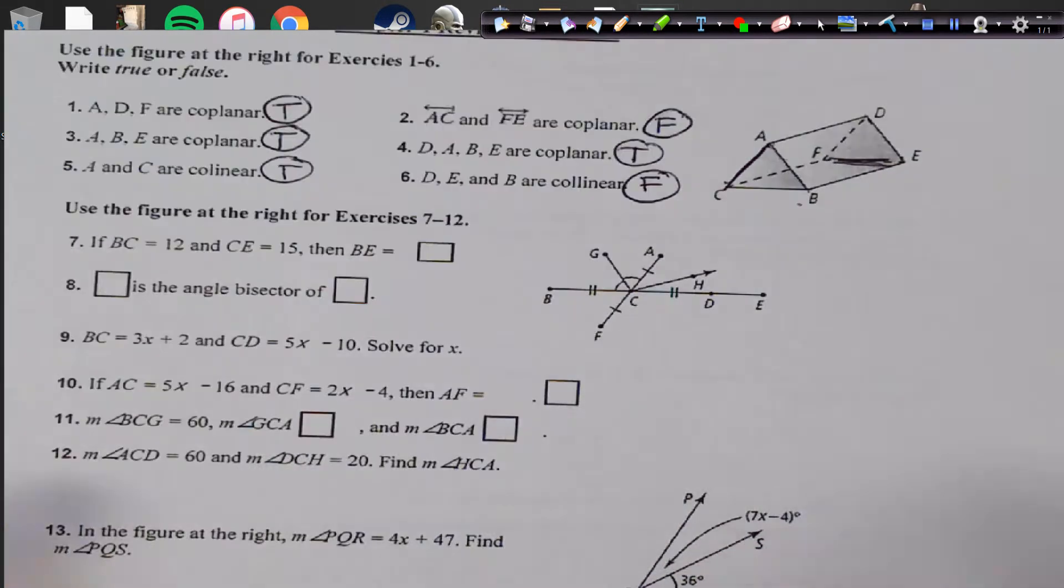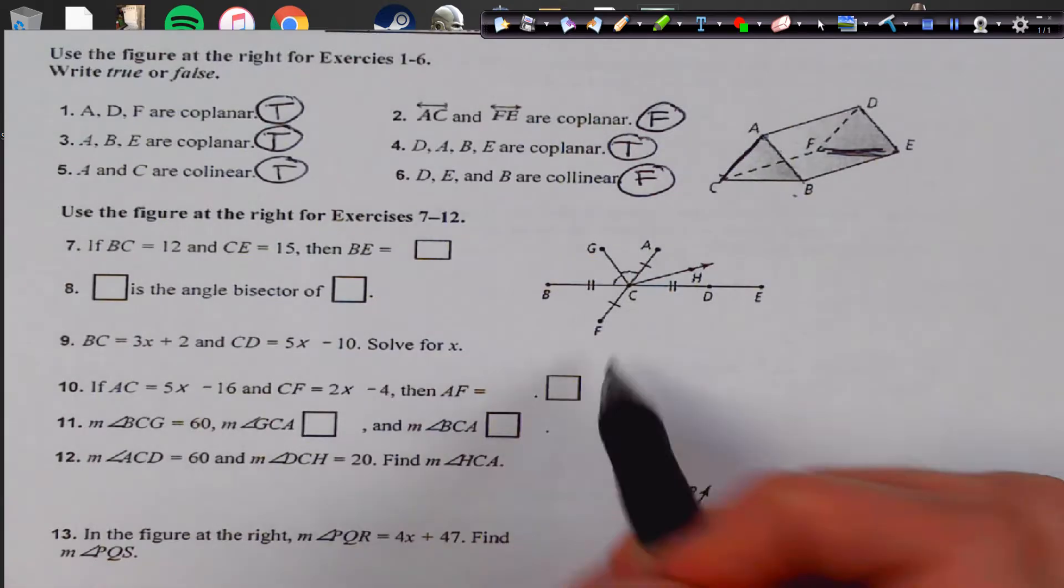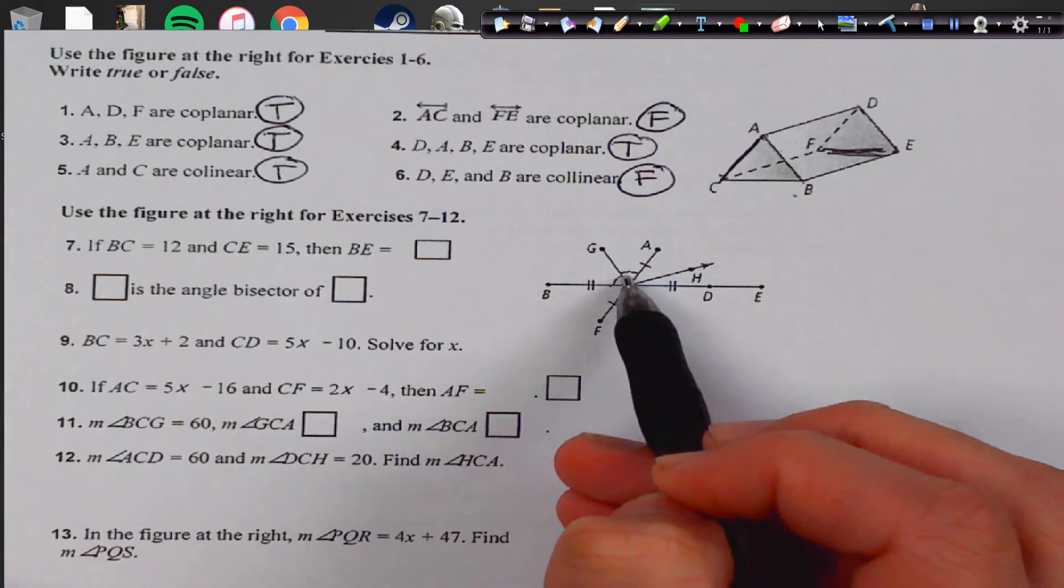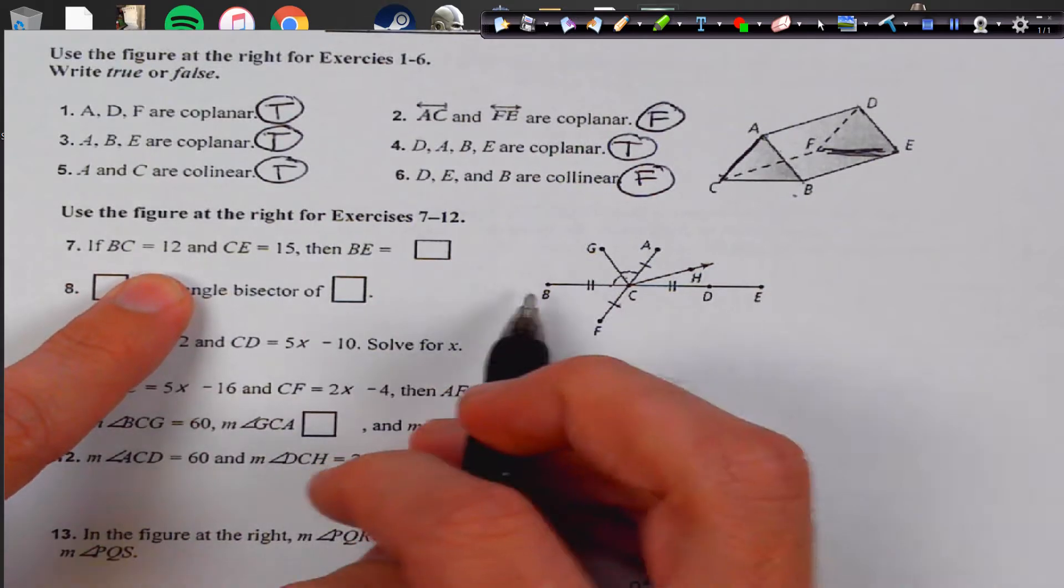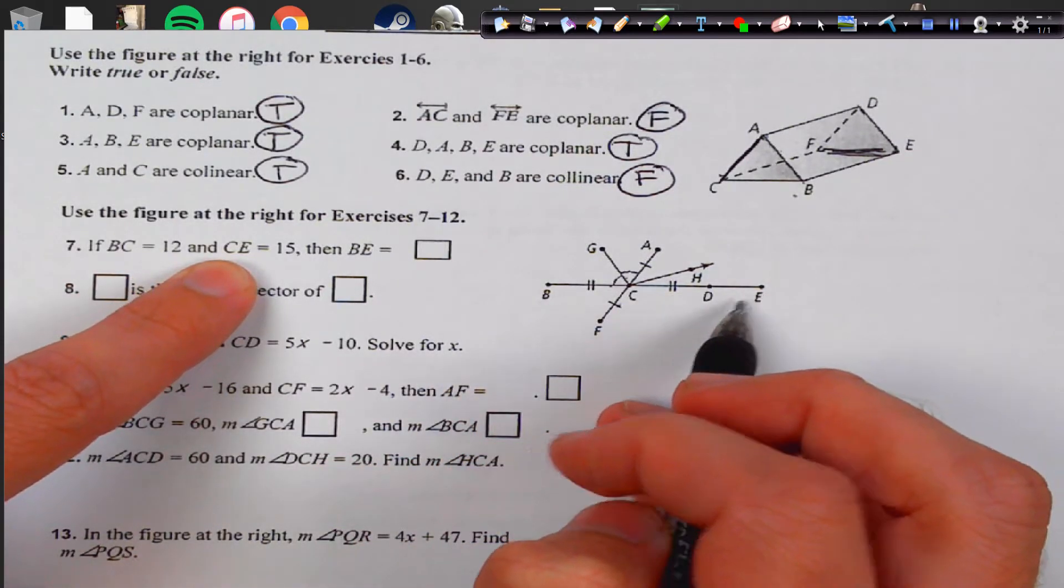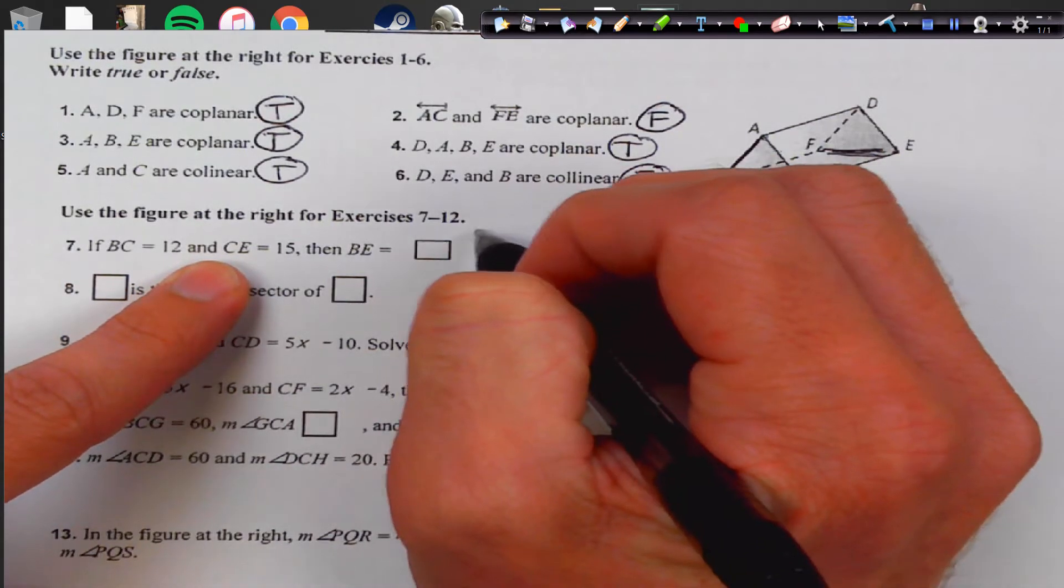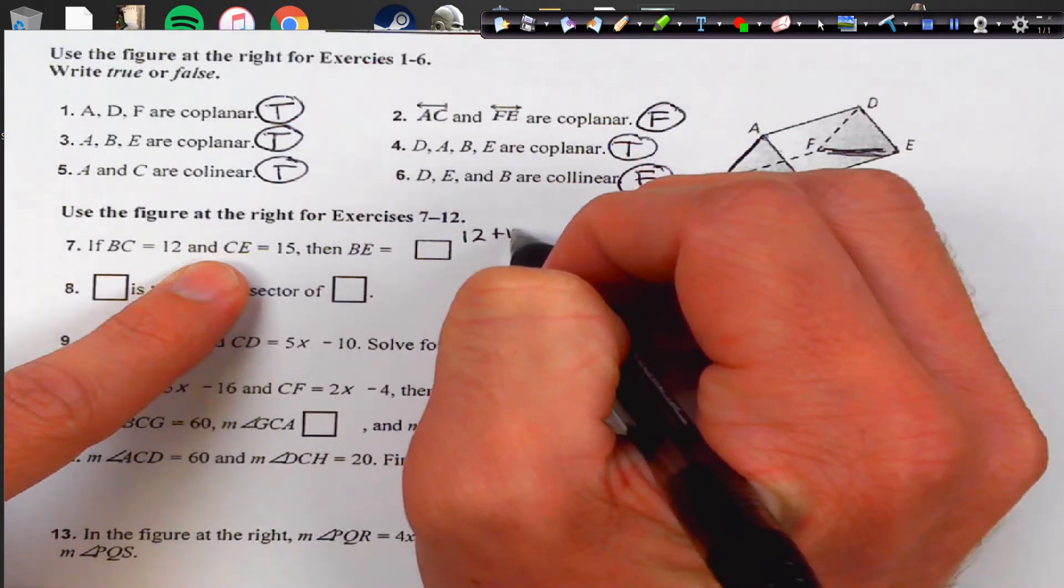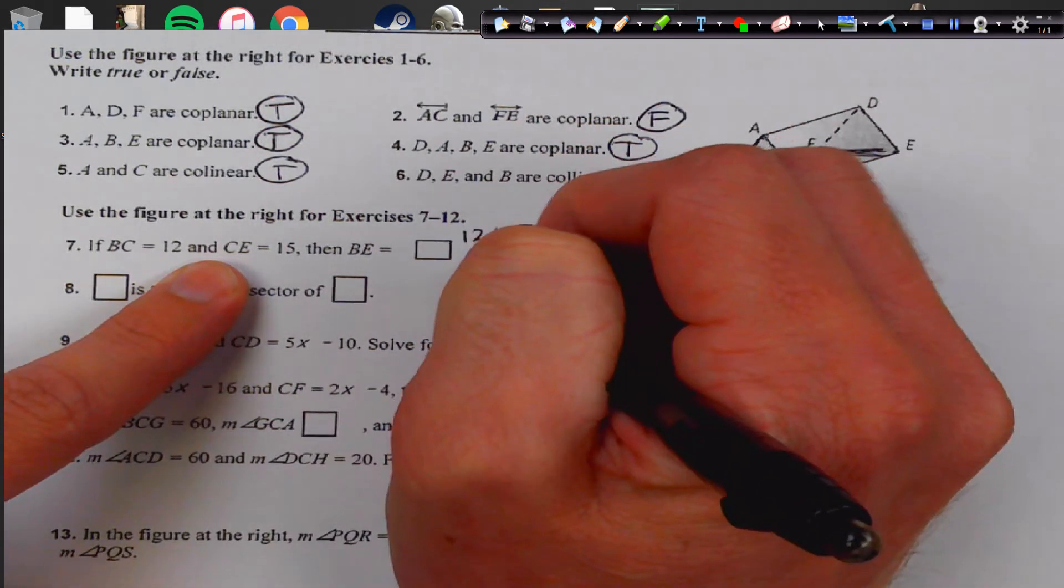Okay. Number seven through twelve, we're using this picture here, and we see congruency marks, so those are congruent. Congruency curves, those angles are congruent, and here's another set of congruency marks. So first, BC is twelve, and CE is fifteen, so what's the total distance? This is segment addition postulate, we're just going to add those two together, and twelve plus fifteen is going to give us twenty-seven.